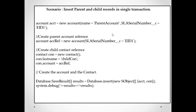Generally, if you want to insert a parent and child record, we first insert the parent record, get the parent record ID, and then use that ID to insert the child record. But the interviewer will ask you to do it without using a parent record ID — he wants to insert both parent and child records in a single transaction.